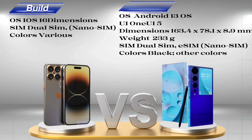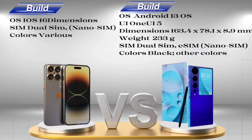Samsung Galaxy S23 Ultra build: OS Android 13, UI One UI 5. Dimensions: 163.4 x 78.1 x 8.9 millimeters. Weight: 233 grams. SIM: Dual SIM, Nano SIM. Colors: black and other colors.